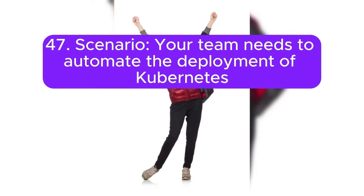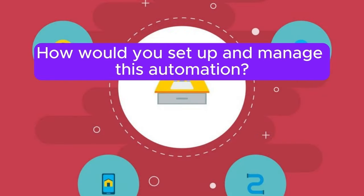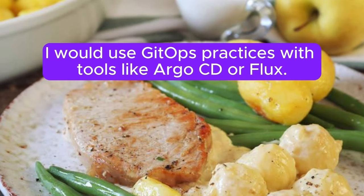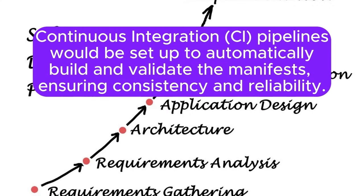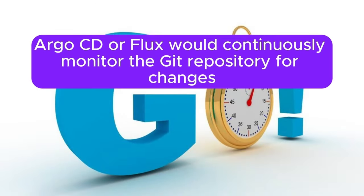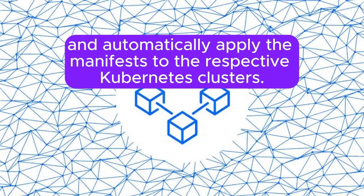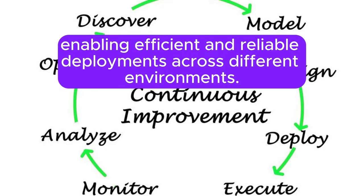Scenario 47: Your team needs to automate the deployment of Kubernetes manifests across multiple environments, for example development, staging, and production. How would you set up and manage this automation? Answer: To automate the deployment of Kubernetes manifests across multiple environments, I would use GitOps practices with tools like Argo CD or Flux. I would store the Kubernetes manifests and configuration files in a Git repository, organized by environment and application. CI pipelines would be set up to automatically build and validate the manifests, ensuring consistency and reliability. Argo CD or Flux would continuously monitor the Git repository for changes and automatically apply the manifests to the respective Kubernetes clusters, providing declarative and auditable infrastructure management.